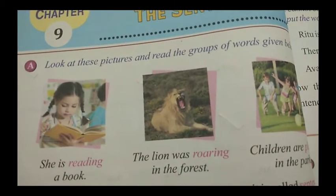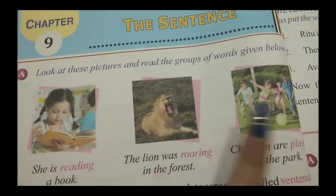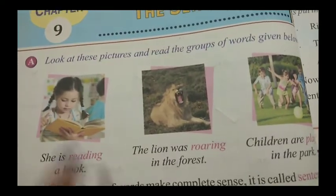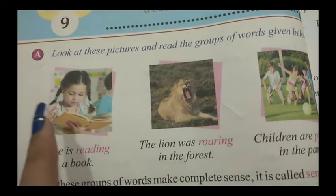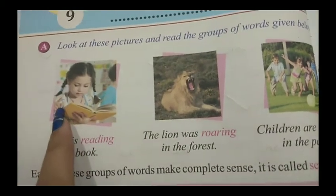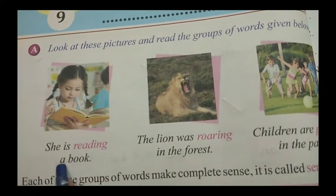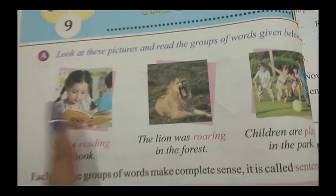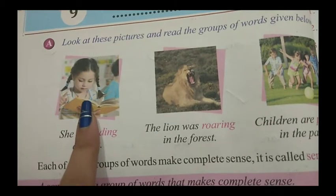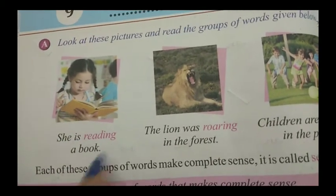Look at these pictures and read the group of words given below. We will see the pictures and then we will see the sentences given here. Here we can see that the girl is reading the book. So we have written: she is reading a book. We are using 'she' for the girl. That is why we have used 'she' — she is reading a book.